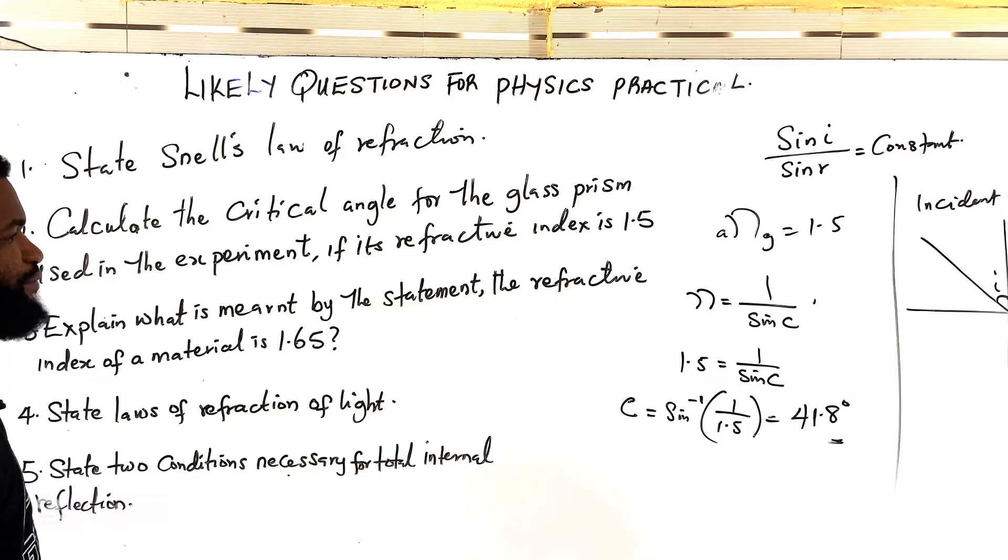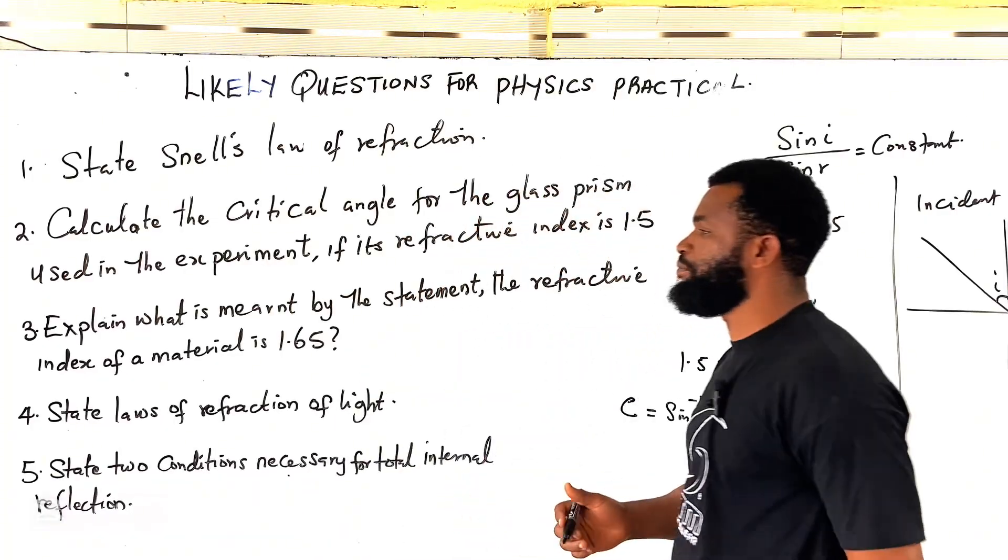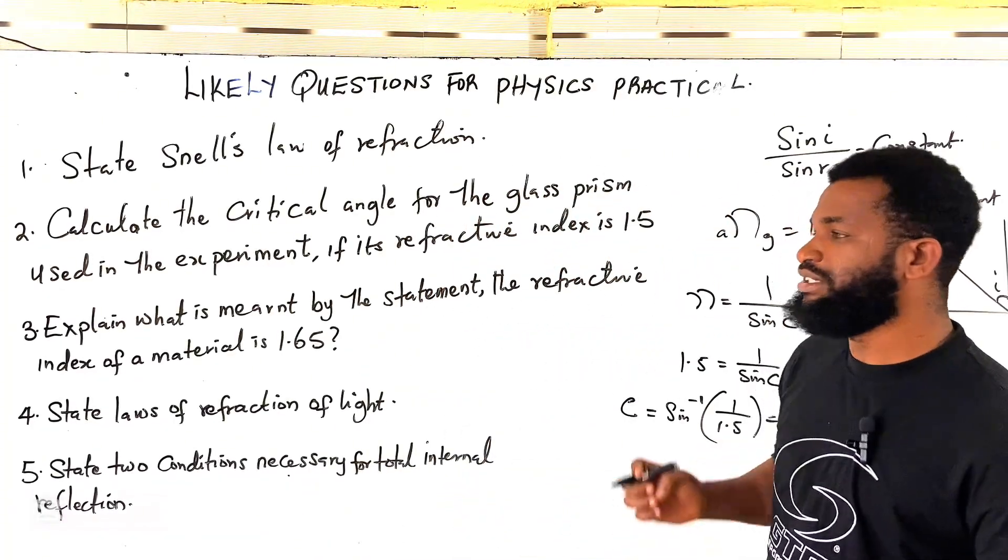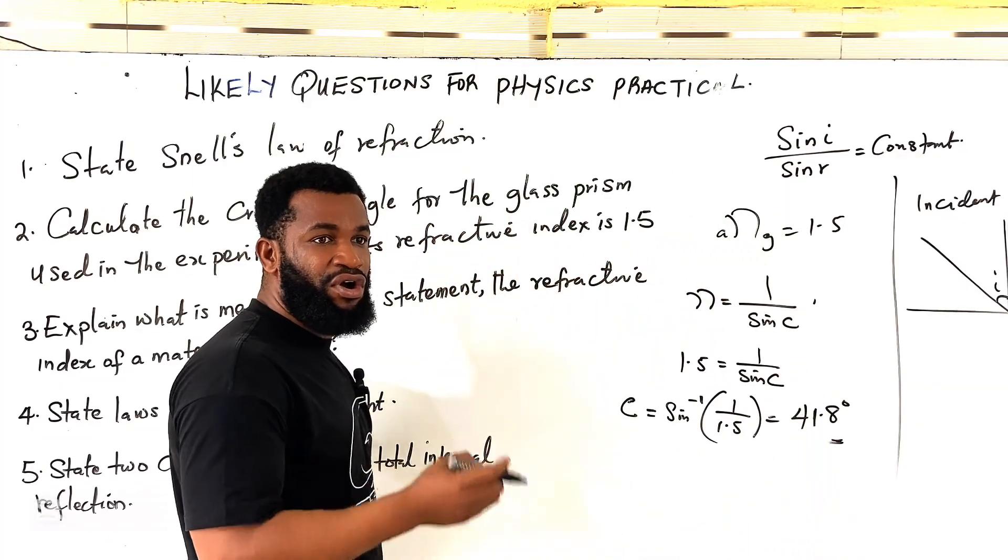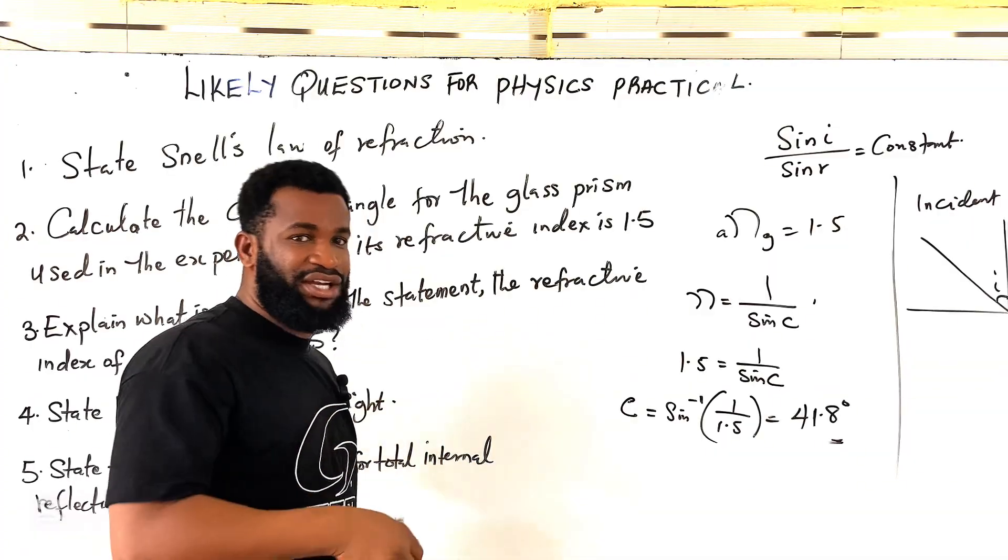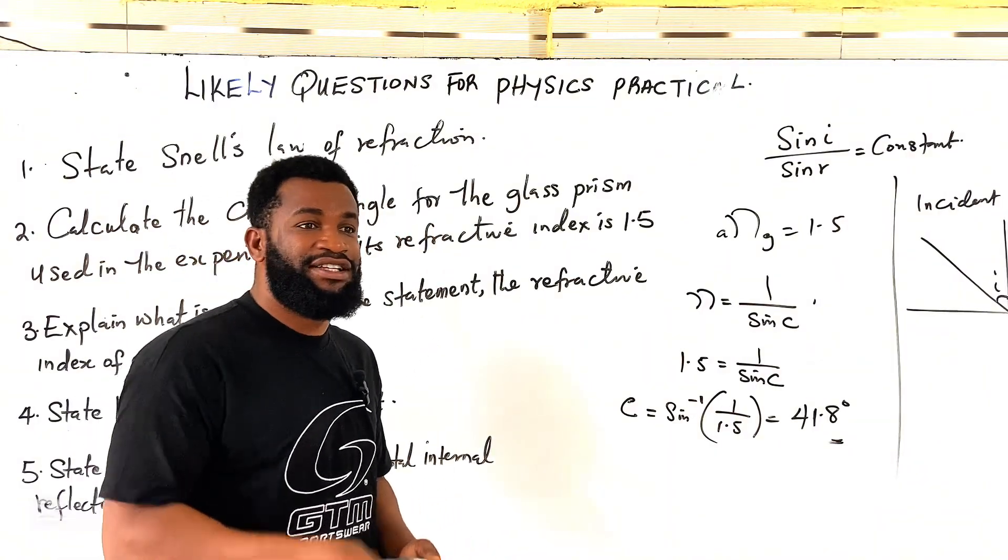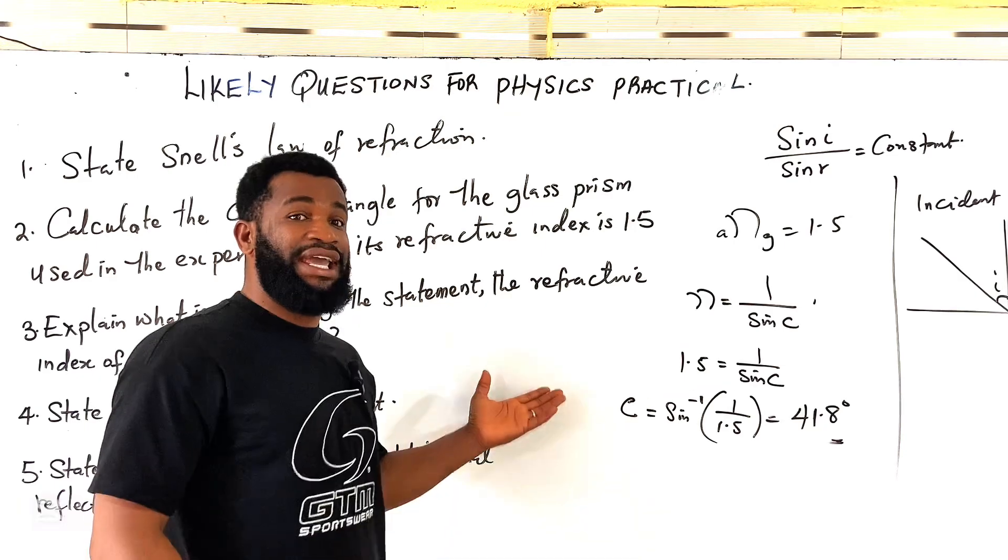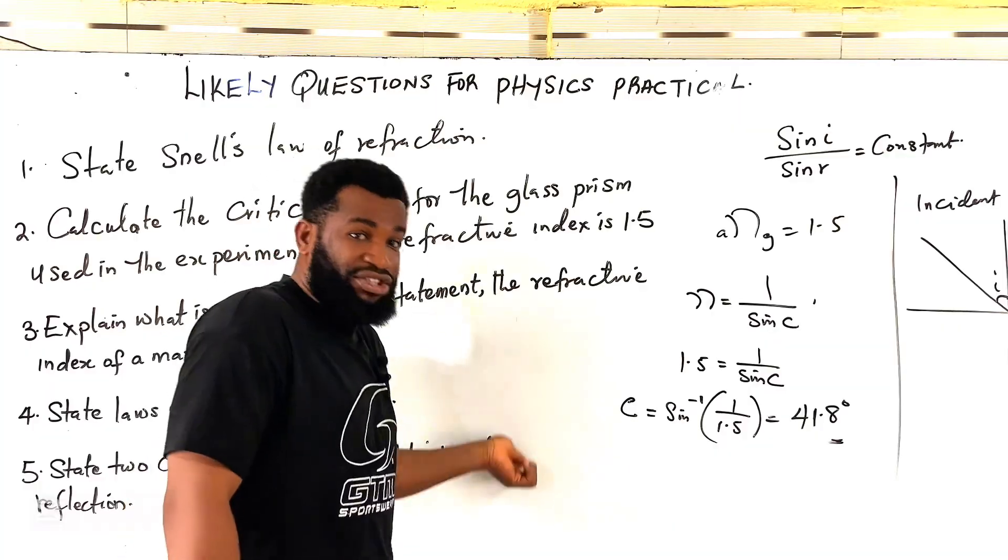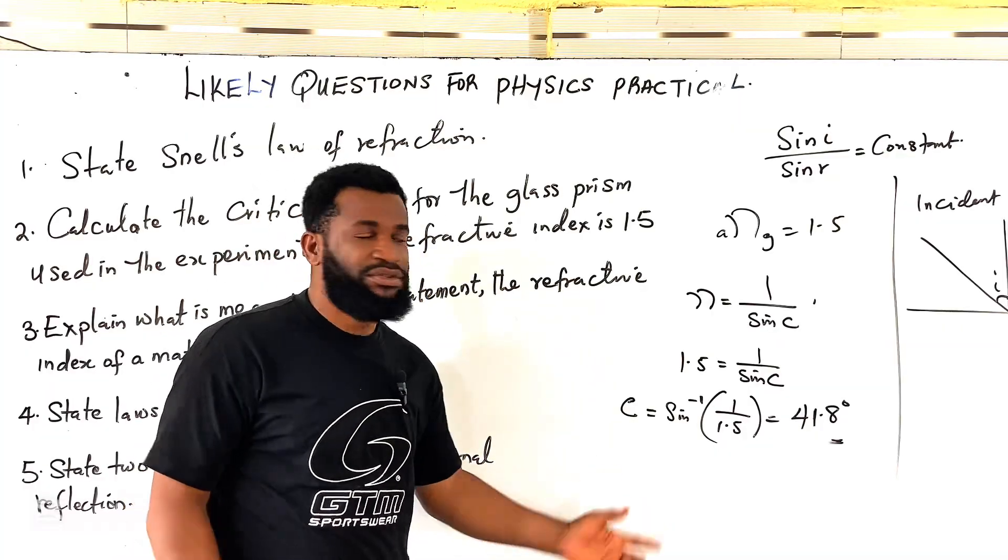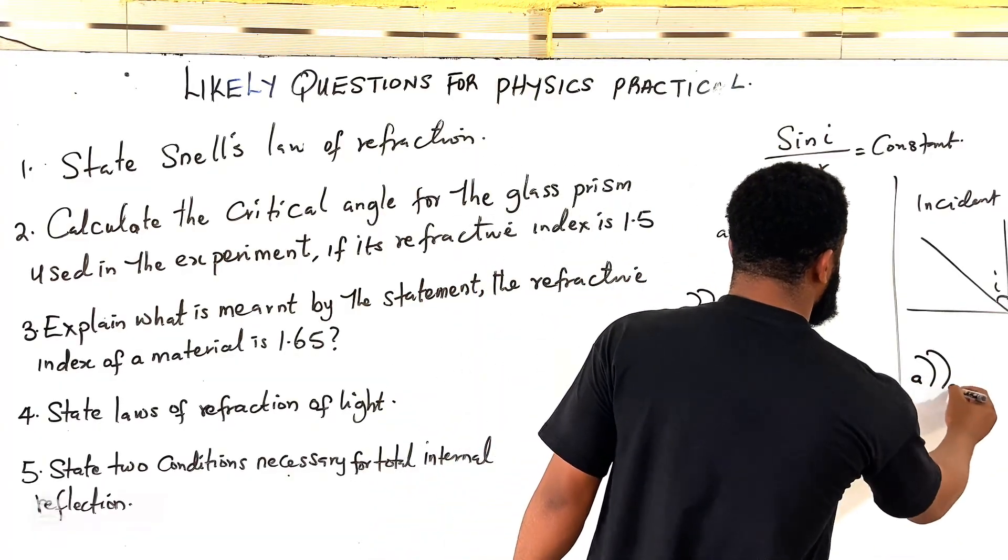Number 3 says explain what is meant by the statement refractive index of a material is 1.65. The refractive index of a material is 1.65. It means that the ratio of the angle of incident to the ratio of the angle of that material is 1.65. Let me put it this way. It simply means that the ratio of the sine of angle through air to the sine of refraction of the material in question is 1.65. So, let me explain further for you to understand. If we have A, G, you know what this means?